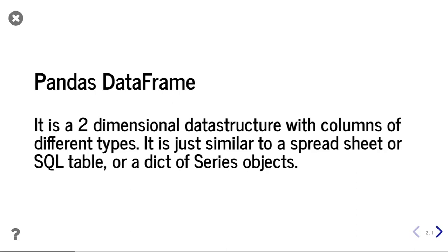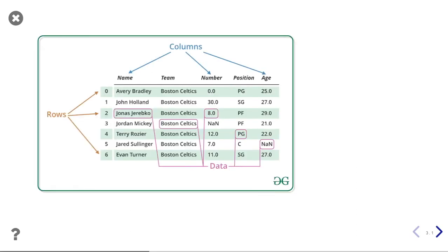If I add five series, it will make five columns and form our DataFrame. Here you can see an example of a DataFrame with multiple rows starting from zero up to six — so there are seven rows and five columns. The columns are name, team, numbers, position, and age. The columns can have different data types, and a column can also contain NaN, that is Not a Number.